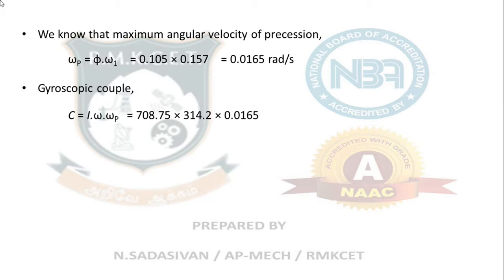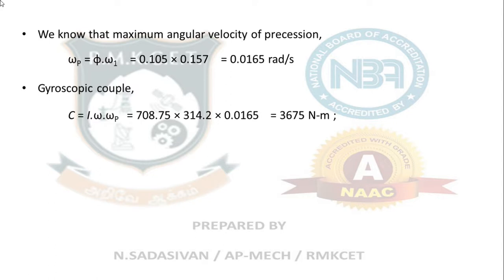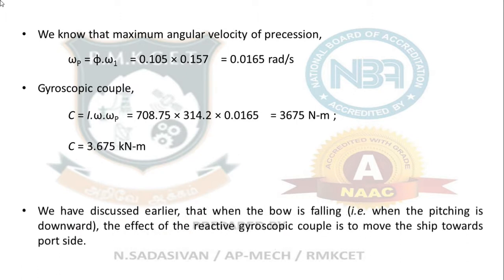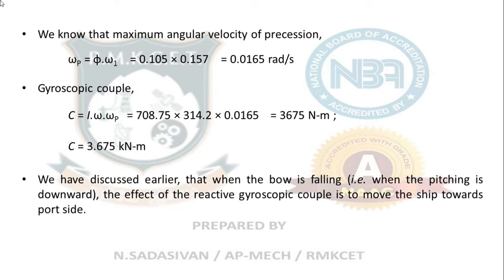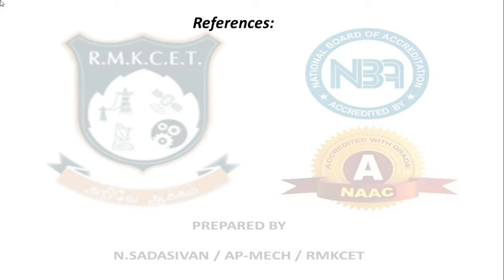The gyroscopic couple is C = I × omega × omega_p. Here omega is the rotor spin speed 3000 rpm (314.2 rad/s) and omega_p is 0.165 radians per second. This gives approximately 3675 Newton meters or 3.675 kilonewton meters as the active couple. The conclusion: when the bow is falling with the rotor going clockwise, the ship will turn towards the port side (left side).